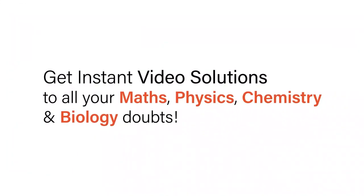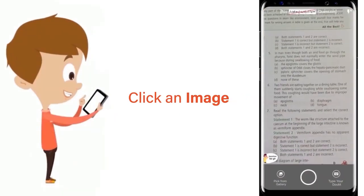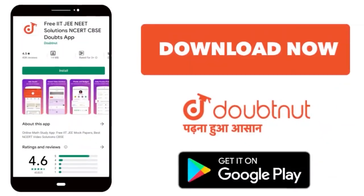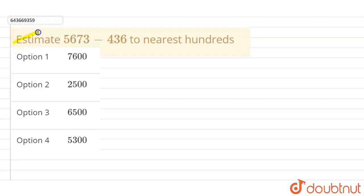With Doubtnet, get instant video solutions to all your maths, physics, chemistry, and biology doubts. Just click the image of the question, crop the question, and get instant video solution. Download Doubtnet app today. Our question is: estimate 5673 minus 436 to nearest 100.